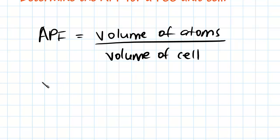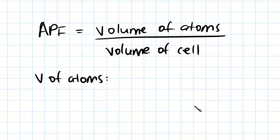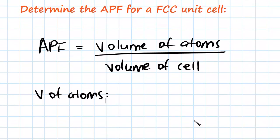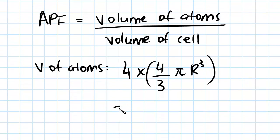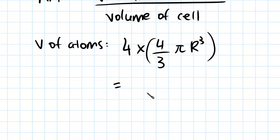Okay, so for the numerator, the volume of the atoms, for an FCC there's four atoms, as you may recall. So it's going to equal four times the formula for a sphere, which is also the formula for an atom, which is going to be 4/3 pi r cubed. Okay, so all together that's going to equal 16/3 pi r cubed.